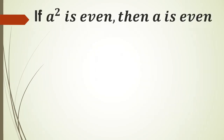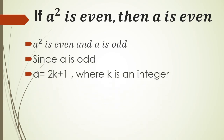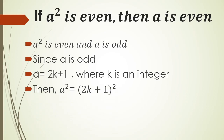Another example: if A² is even, then A is even. We assume for the sake of contradiction that A² is even (our P) and the negation of Q: A is odd. Since A is odd, A = 2K + 1 for some integer K. Then A² = (2K + 1)².